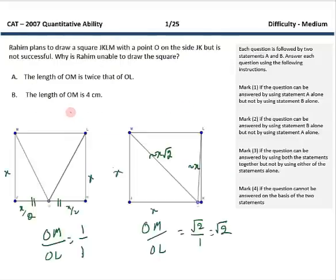A square has to be drawn with O on one side of the vertex. However that is not possible and two reasons are given. The first reason says length of OM is twice that of OL. OM by OL will be minimum when O is exactly in center, in which case the ratio is 1:1. However when O is close to one particular vertex, this ratio is maximum, which is X root 2 over almost X, becoming root 2. So the ratio can never be twice. Hence this statement can be used to answer the question why he wasn't able to draw the square.